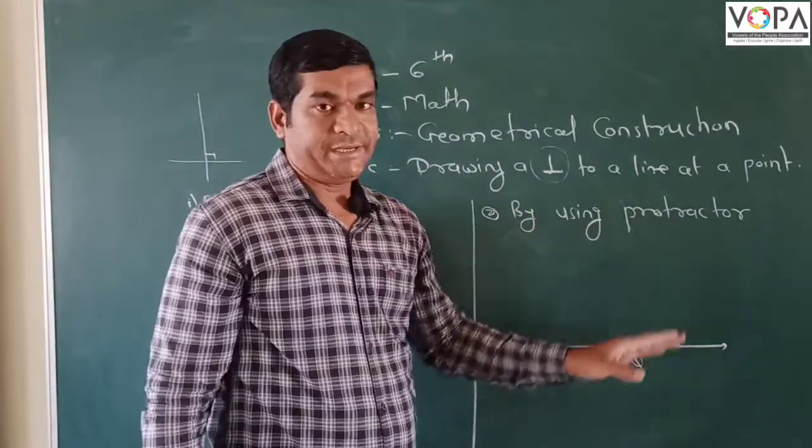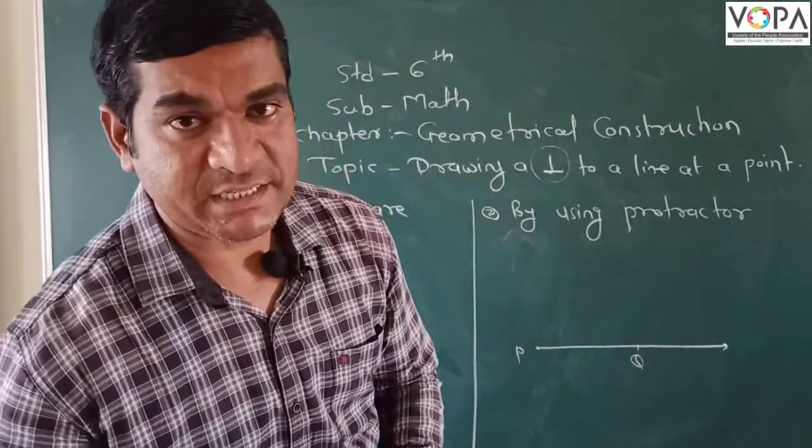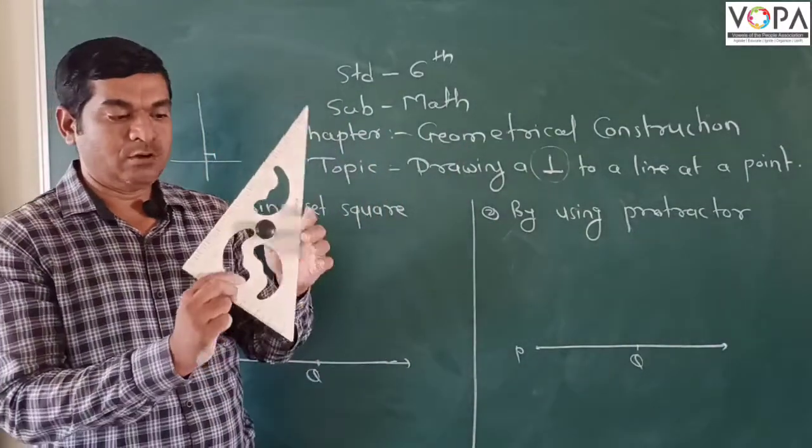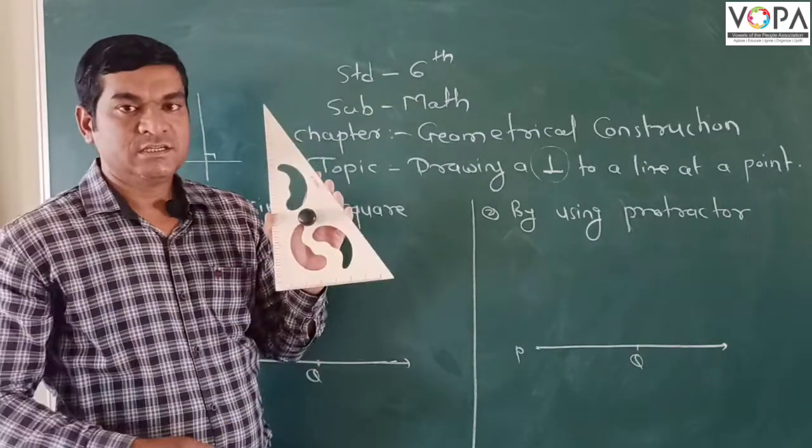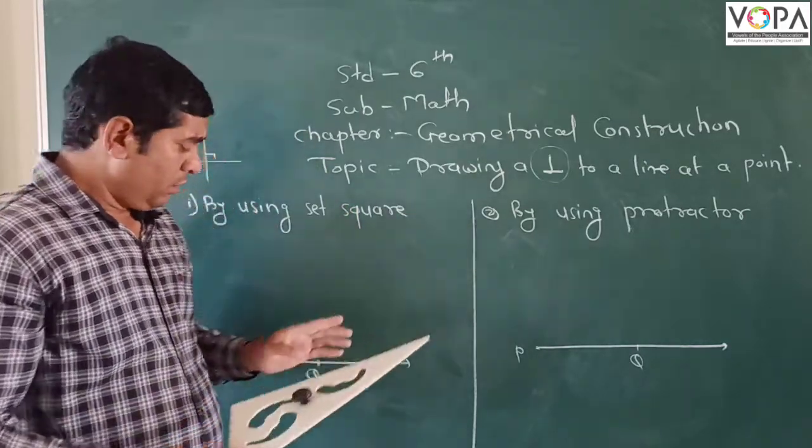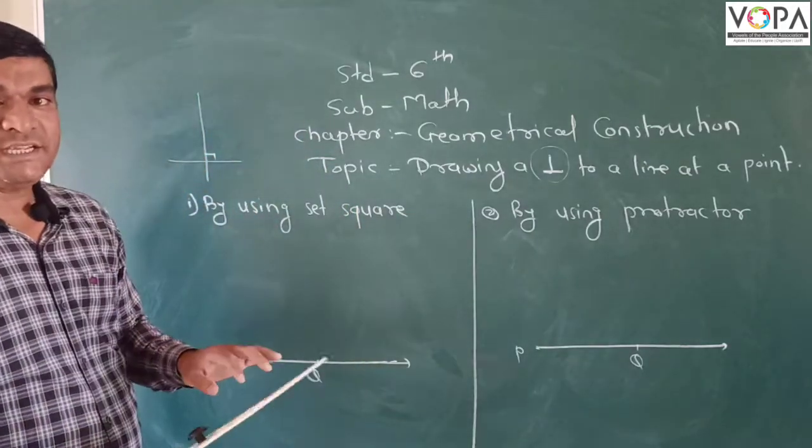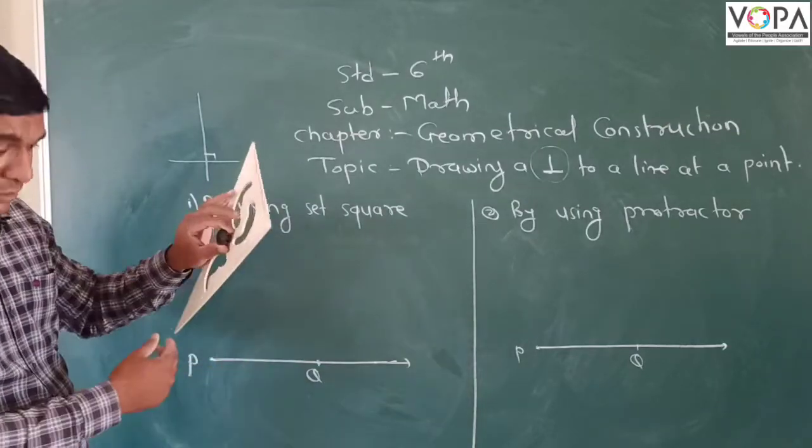By using protractor, or if we are drawing by using set square, then we call this type as a set square. This mathematical instrument is called a set square. So draw the perpendicular by using set square.